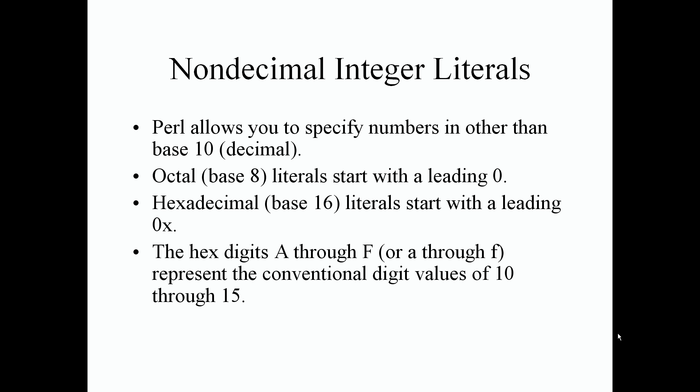The hex digits A through F or a through f lowercase represent the conventional digit values of 10 through 15. So A is 10, of course, B is 11, C is 12, and so on. So binary, binary is base 2. We can use base 2 literals that start with a leading 0b followed by the binary number.